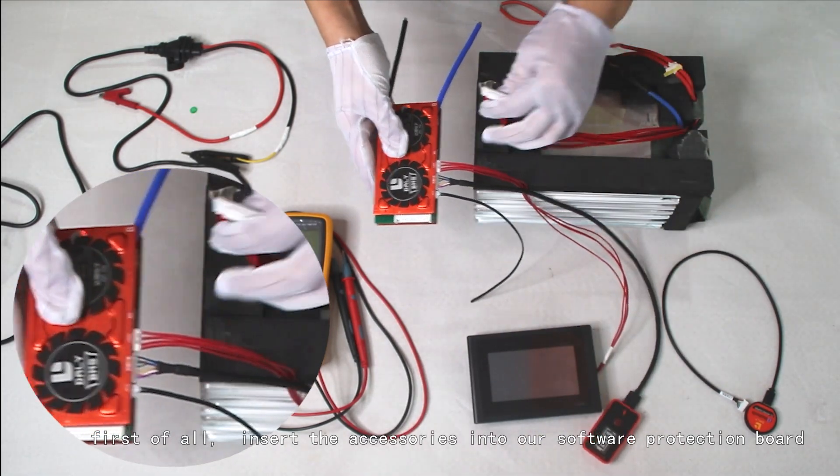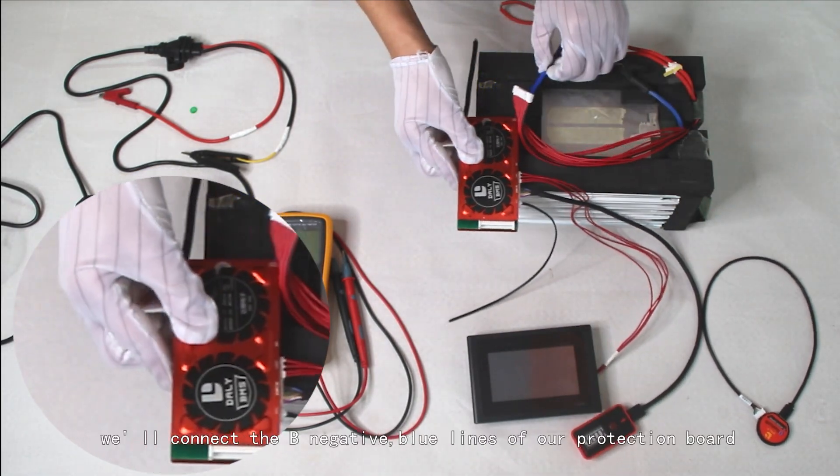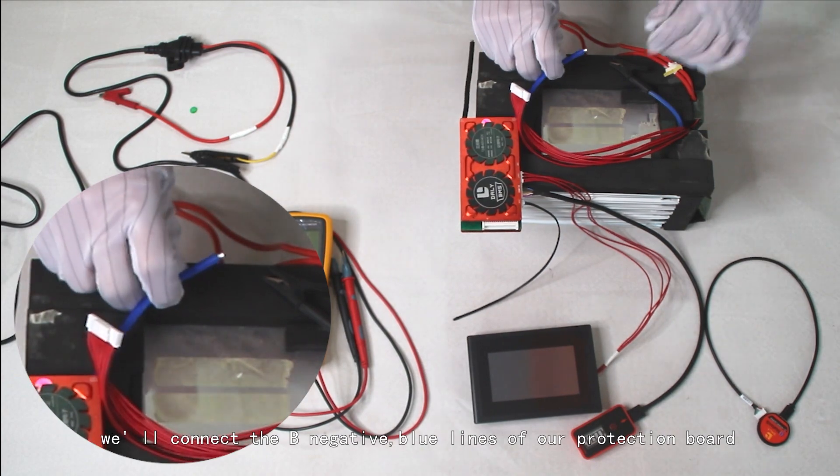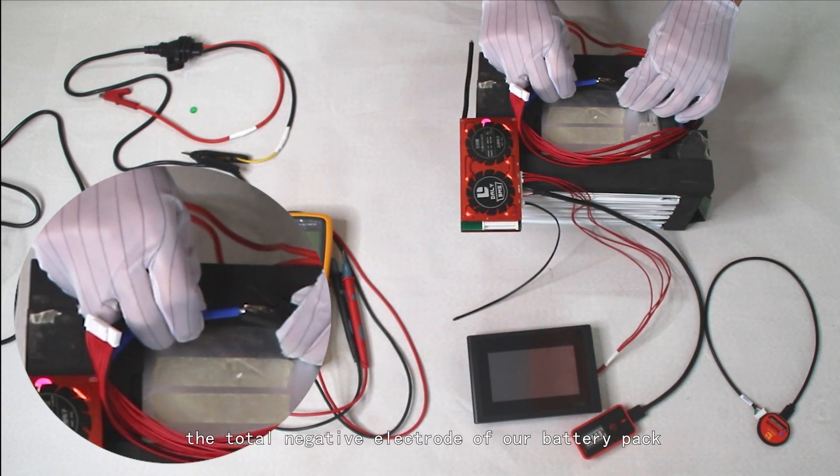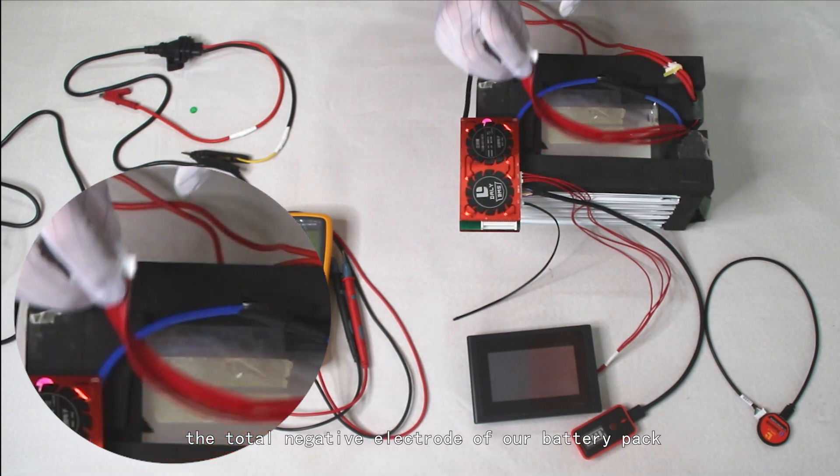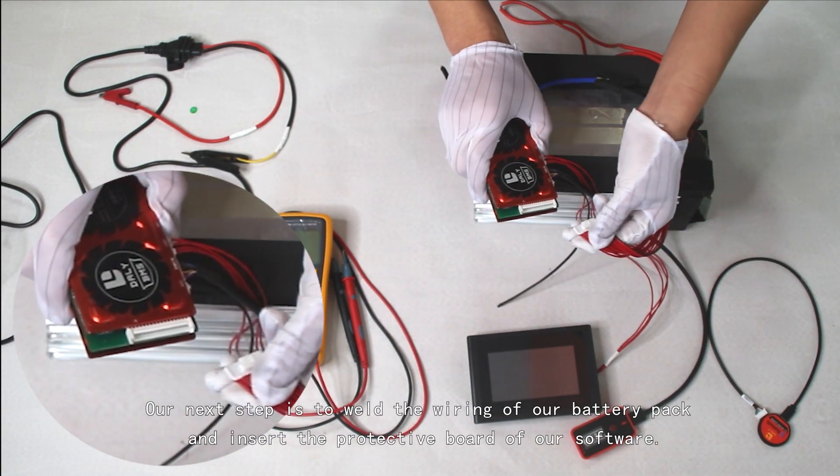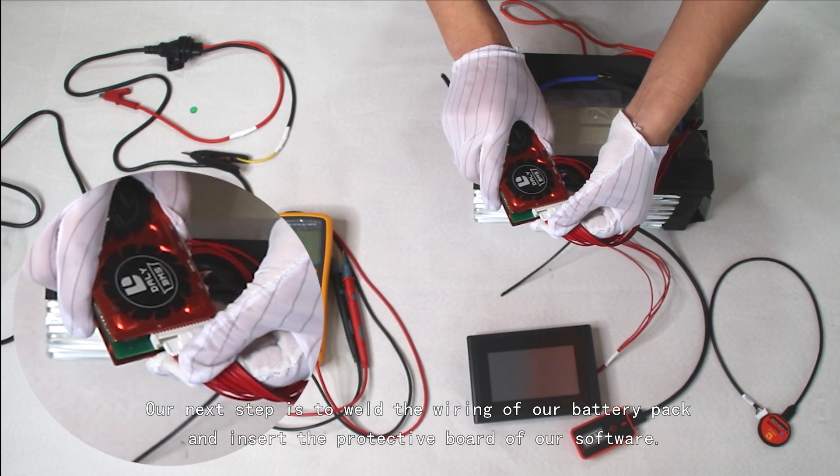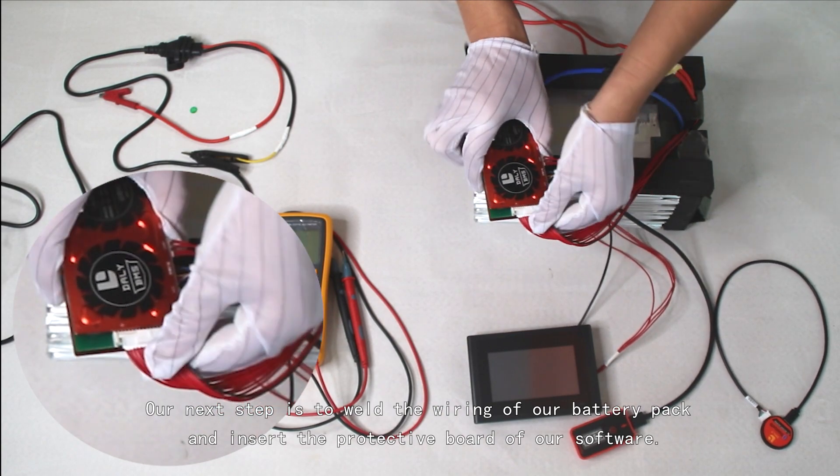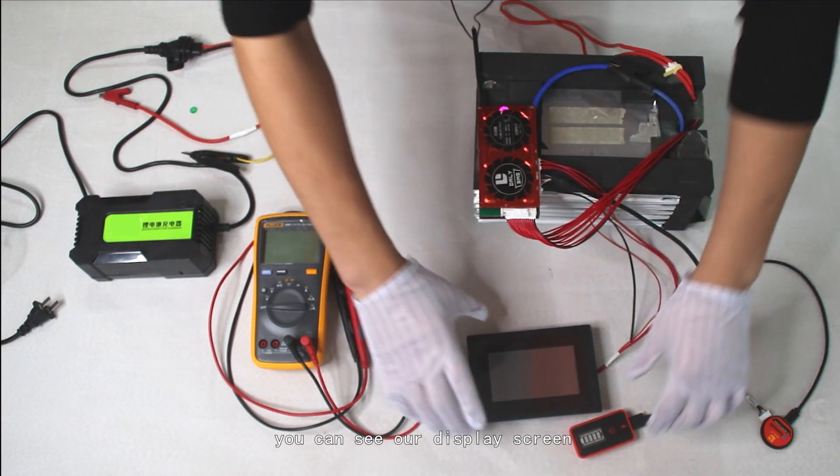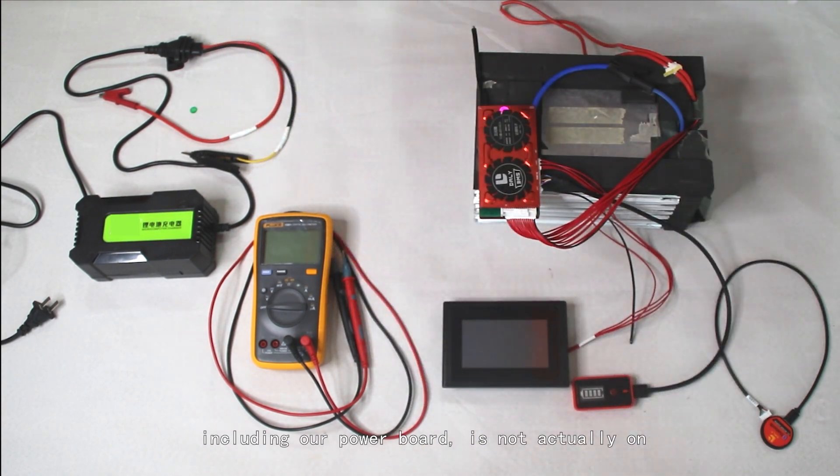We'll connect the B negative blue lines of our protection board to the total negative electrode of our battery pack. Next, weld the wiring of our battery pack and insert it into the protective board of our software. At this time you can see our display screen, including our power board, is not actually on.